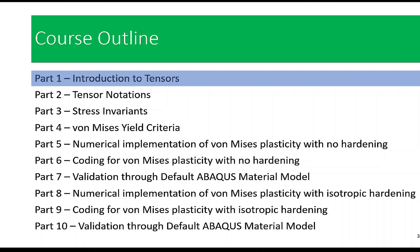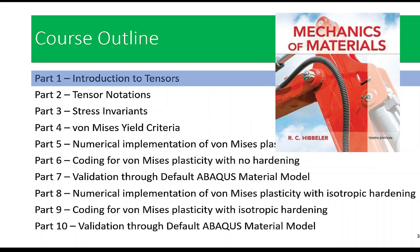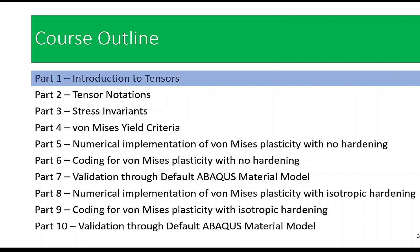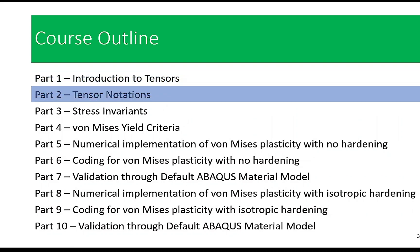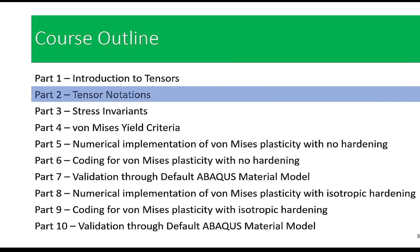In part one, we will embark on our journey by exploring the fascinating world of tensors and their profound importance in the field of mechanics of materials. Tensors are the mathematical framework that allow us to describe and understand the complex behavior of materials under various stresses. In part two, we will dive deeper into the different tensor notations and discover their significance in deciphering how materials respond to stress. These notations are like the language of mechanics, helping us make sense of the intricate behaviors of materials under different conditions.